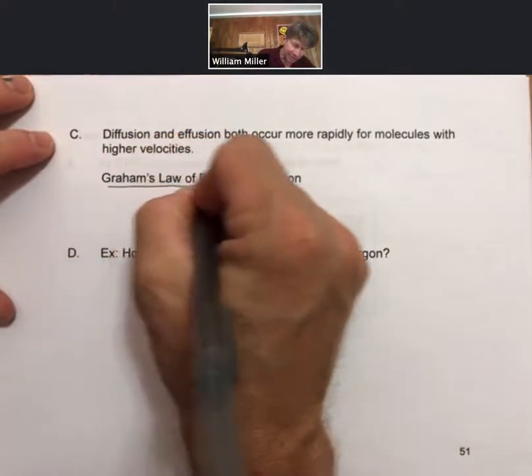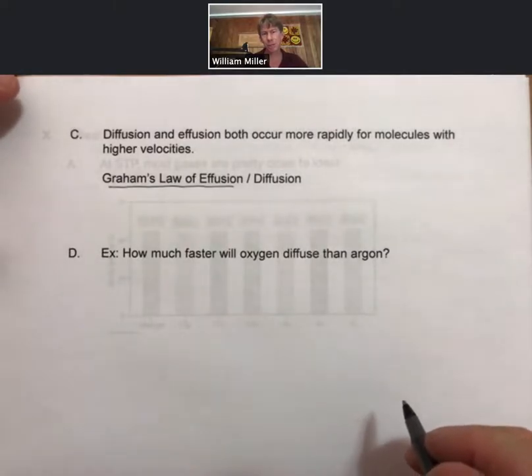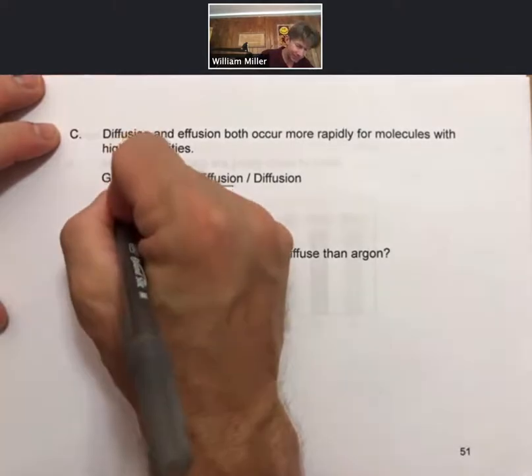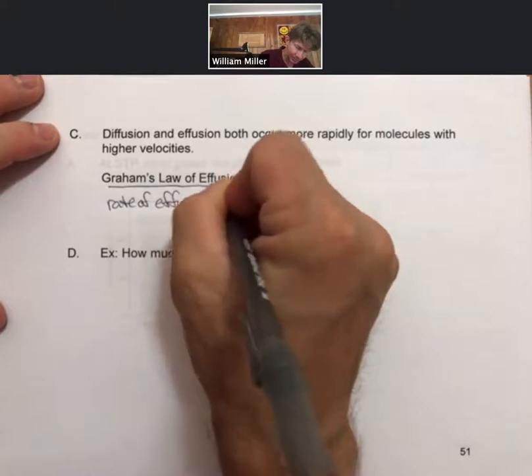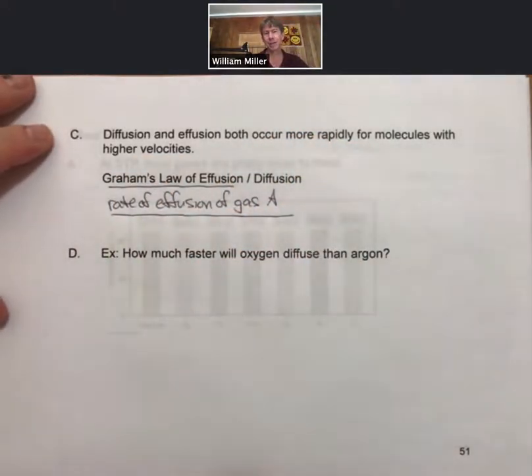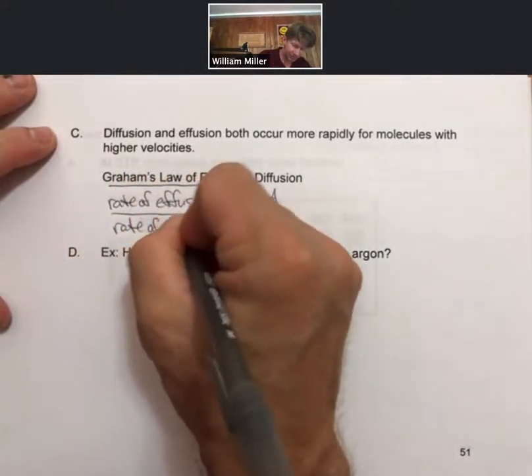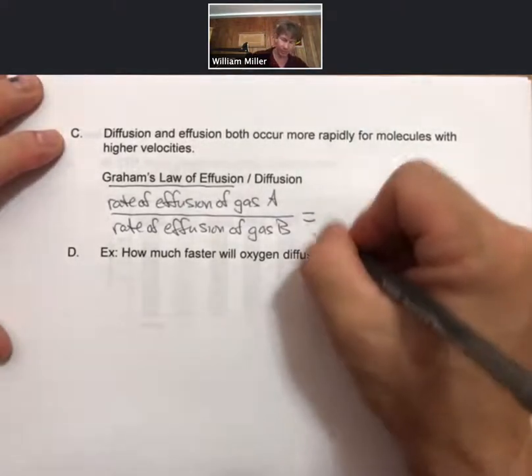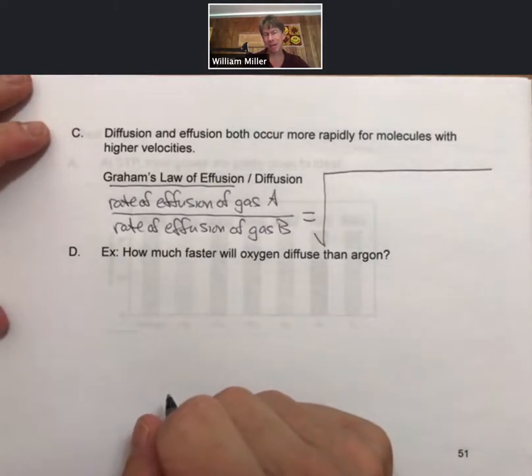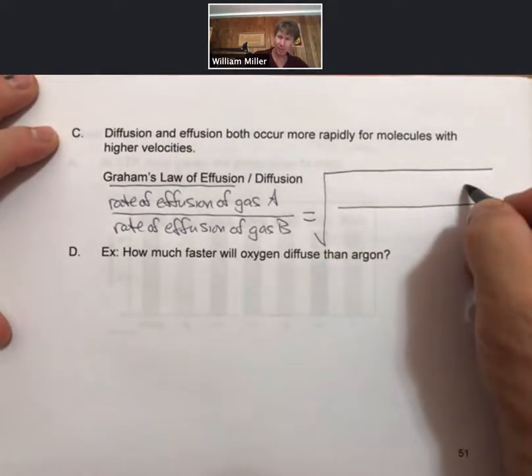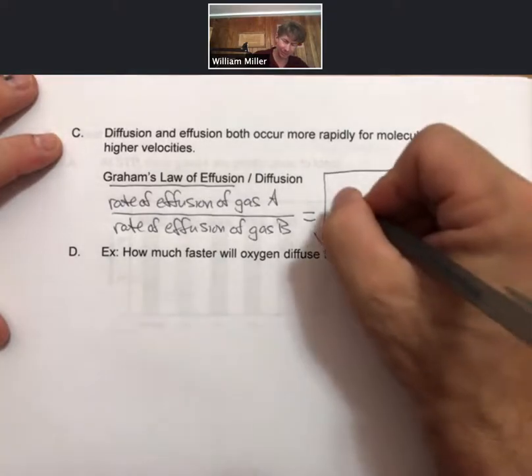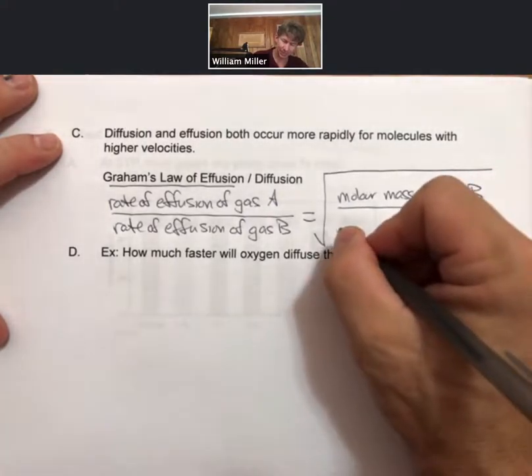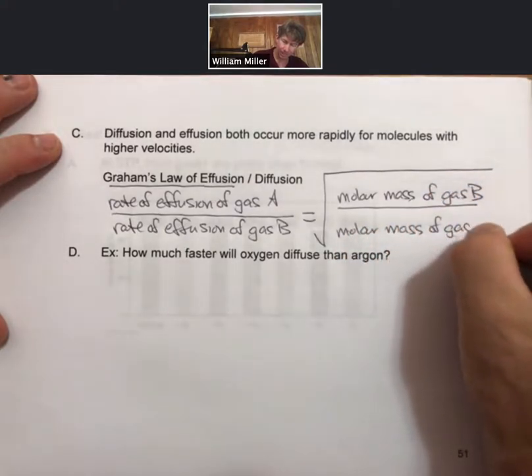And the law is actually called the Graham's law of effusion. It is also related to diffusion as well. Here is the law. It says rate of effusion of gas A divided by rate of effusion of gas B is equal to the square root of the inverse of their molar masses. So that means that the molar mass of gas B is going to be in the numerator and the molar mass of gas A is going to be in the denominator. That's right: B on top, A on the bottom.